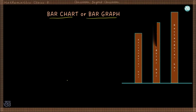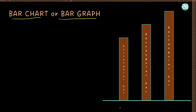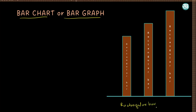A bar chart uses rectangular bars that have some height and width. The width of the rectangular bar represents nothing, and there should be equal space between these rectangular bars. The height of the rectangular bar represents the frequency of the data.